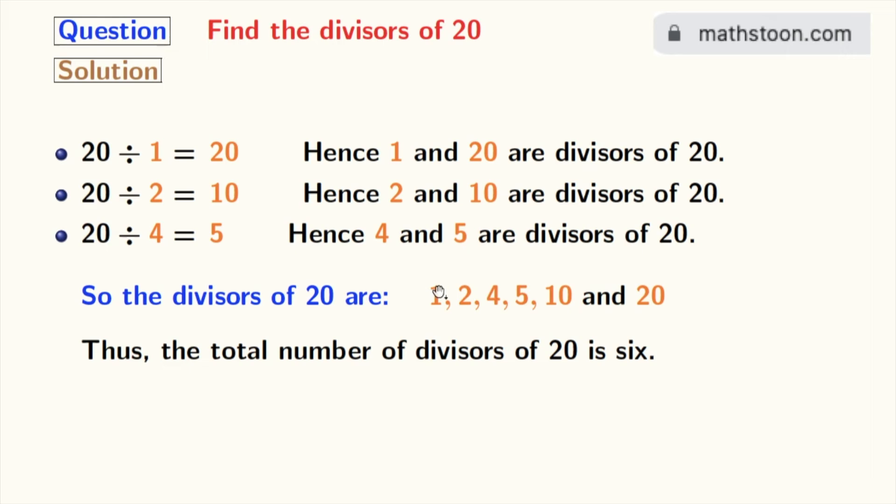So, the total number of divisors of 20 is 6. Now, if we look at these divisors, we can see that 2 and 5 are prime numbers because these two numbers do not have any divisor other than 1 and that number itself. So, we can say that the prime divisors of 20 are 2 and 5.